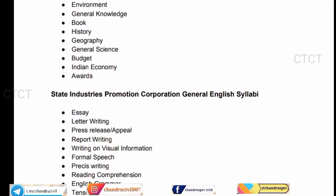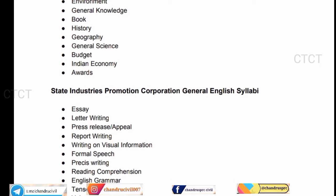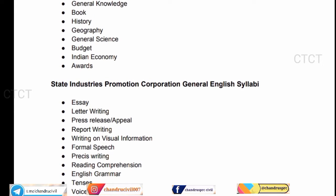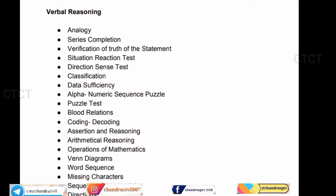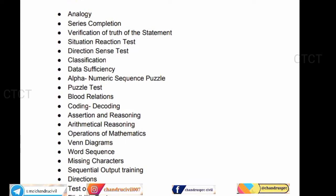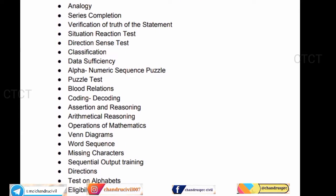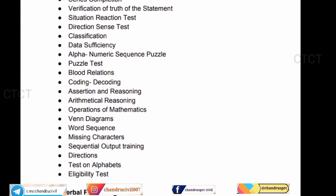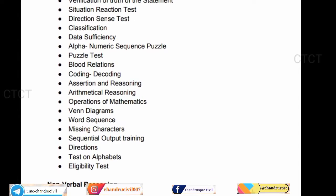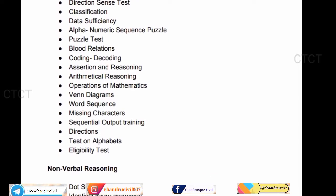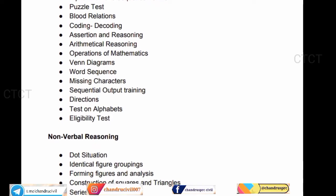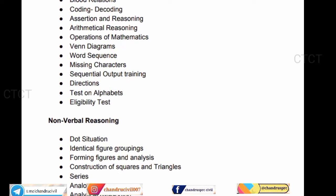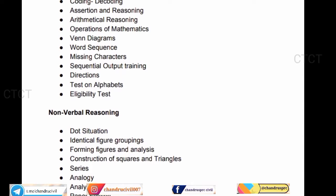To cover the general English, the next visual reasoning topics are: analogies, series completion, situation reactions, direct sense, data sufficiency, coding, blood relations, operations of mathematics, Venn diagram, sequence of output training, eligibility test — that is non-verbal reasoning.